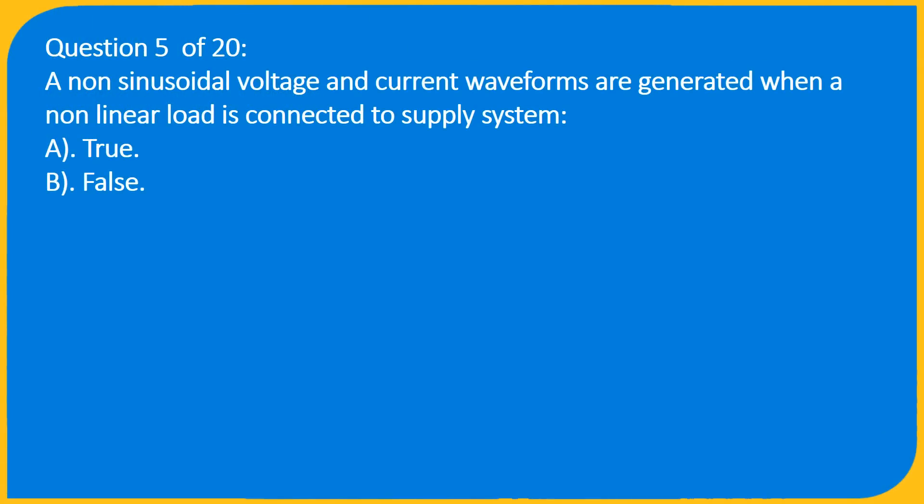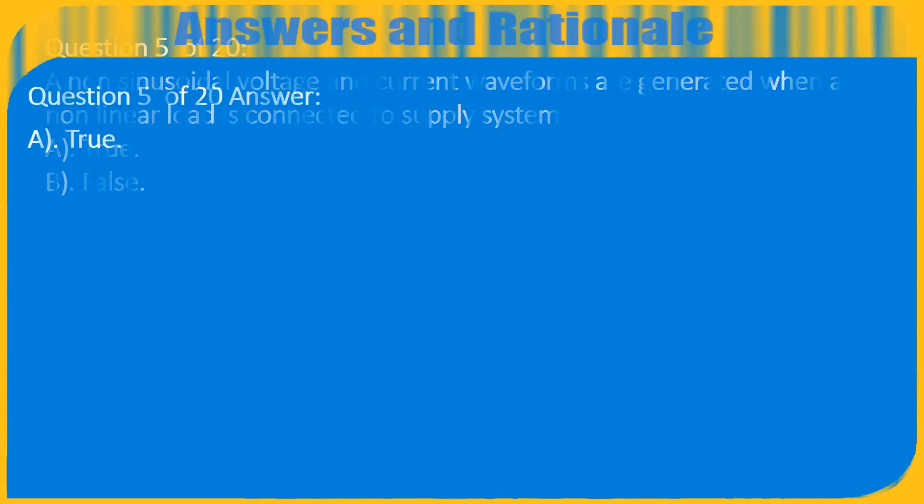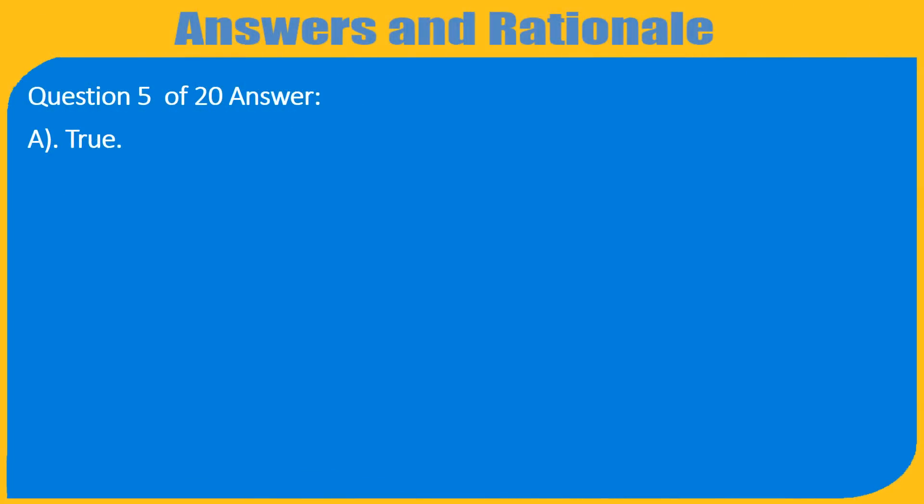Question 5 of 20: Non-sinusoidal voltage and current waveforms are generated when a non-linear load is connected to the supply system. A. True, B. False. Answer: A. True.